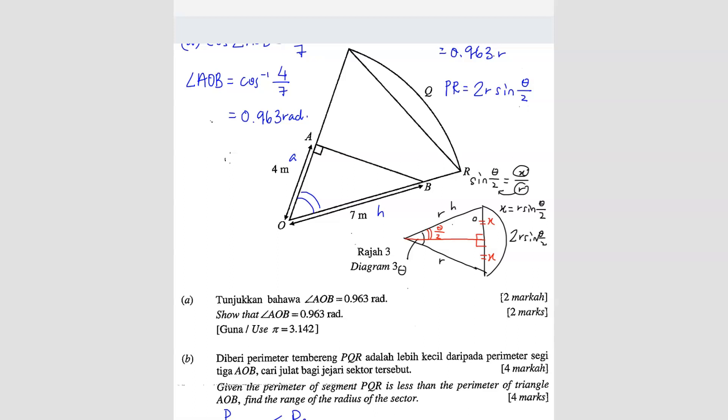So if you don't want to do this in the exam, you just straight away memorize. If you want to find the length of this length here, just remember 2R sine theta over 2. You can memorize this.